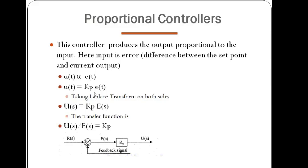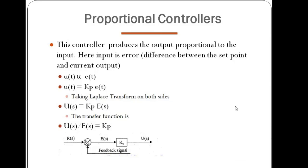Taking the Laplace transform on both sides: U(s) = Kp × E(s). The transfer function is defined as the ratio of the Laplace transform of the output to the Laplace transform of the input, with zero initial conditions. Please keep in mind that the transfer function always holds for zero initial conditions.